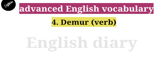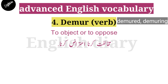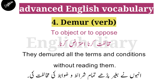The next word is 'demur.' Demur means to object or to oppose — mukhaalifat karna, aitaras karna. It is also a verb. Its past form is 'demurred' and continuous form is 'demurring.' For example: They demurred all the terms and conditions without reading them — unhone baghaer padhe hi tamam sharaaito zawaabit ki mukhaalifat ki, ya aitaras kiya.